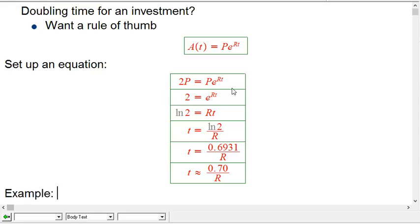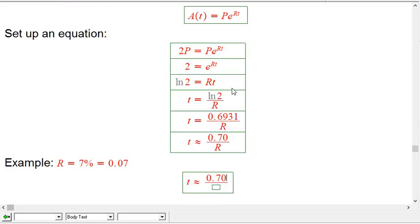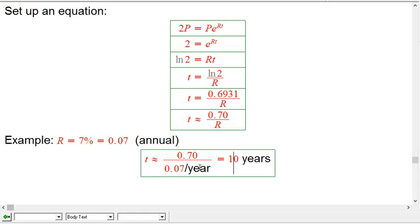Let's do an example and we're going to streamline it even more in a second. Let's say R is 7%, so that's 0.07. The doubling time is approximately 0.70 / 0.07, and that's 10 years. This assumes T and the interest rate were measured in years. If this was an annual interest rate of 7% per year, that's why the years come in.